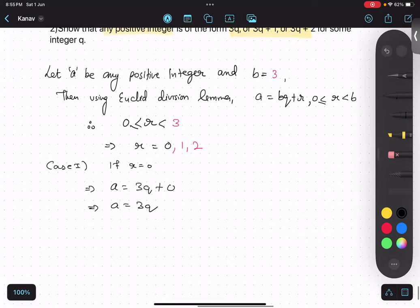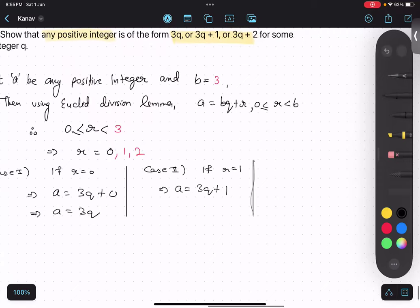So, case number 1 is done, case number 2, it will be if r equals to 1, then a equals to 3q plus 1, that is also done, case number 3, if r equals to 2, then a equals to 3q plus 2.